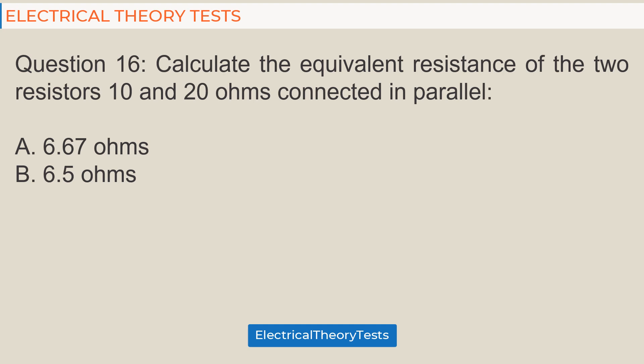Question 16: Calculate the equivalent resistance of the two resistors 10 and 20 ohms connected in parallel: A. 6.67 ohms, B. 6.5 ohms.